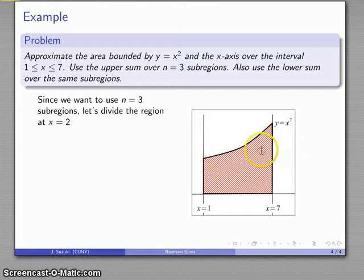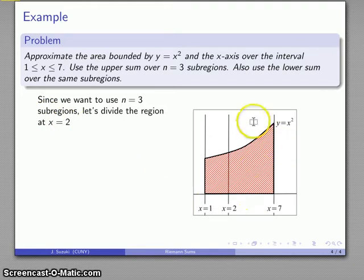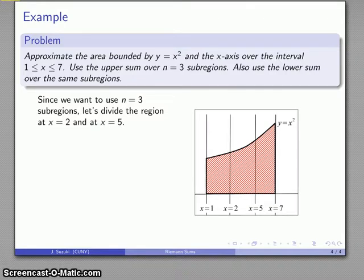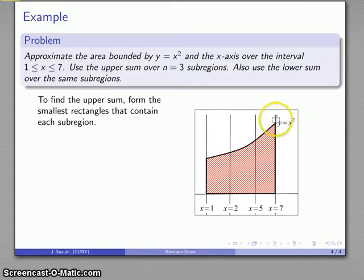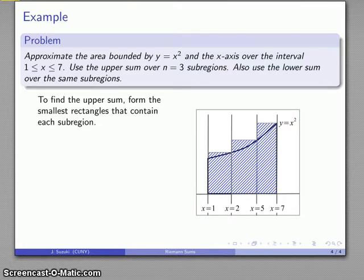I want to divide this region into three pieces, so I need what are called partition points. My first partition will occur at x equals two — that's a nice number. Then I need a second partition point somewhere between two and seven — how about x equals five, just to make our lives easier. So we'll partition the region at x equals two and x equals five. To find the upper sum, I'll find the smallest rectangle that contains each sub-region — the idea is: I want to ship each piece, what's the smallest box I can use?